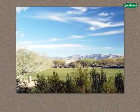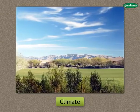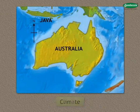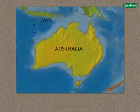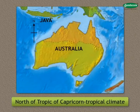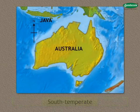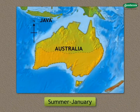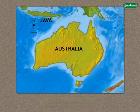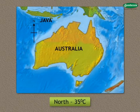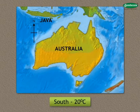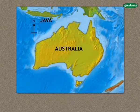Now, let us get to know about the climate. The climate of Australia is generally hot and dry. The area to the north of the Tropic of Capricorn has a tropical climate, whereas to its south it is temperate. During summer, in the month of January, the mean temperature in the north is 35 degrees Celsius, while in the south it is 20 degrees Celsius.